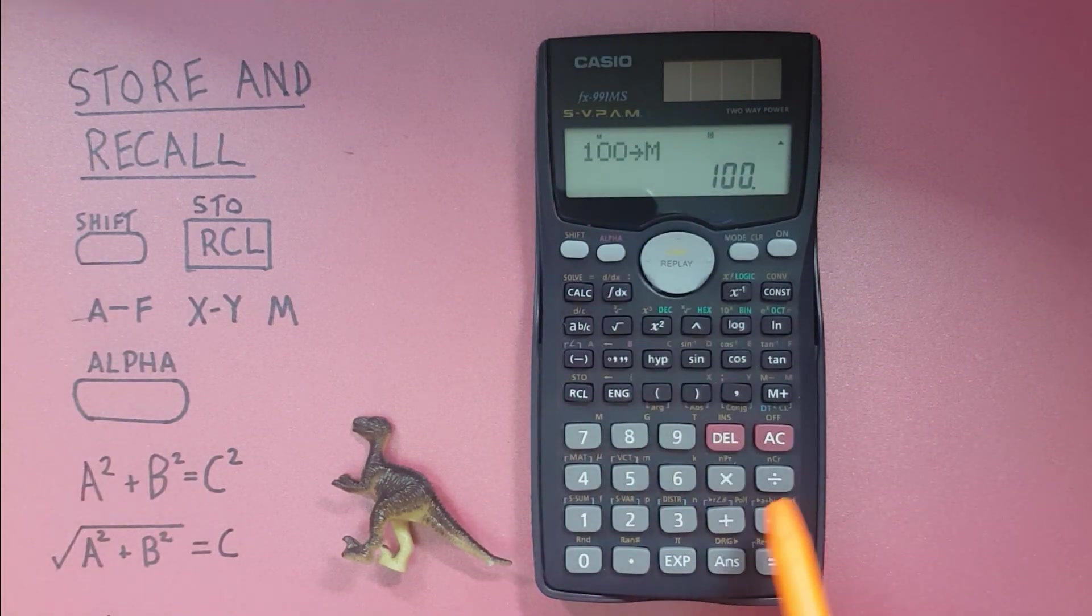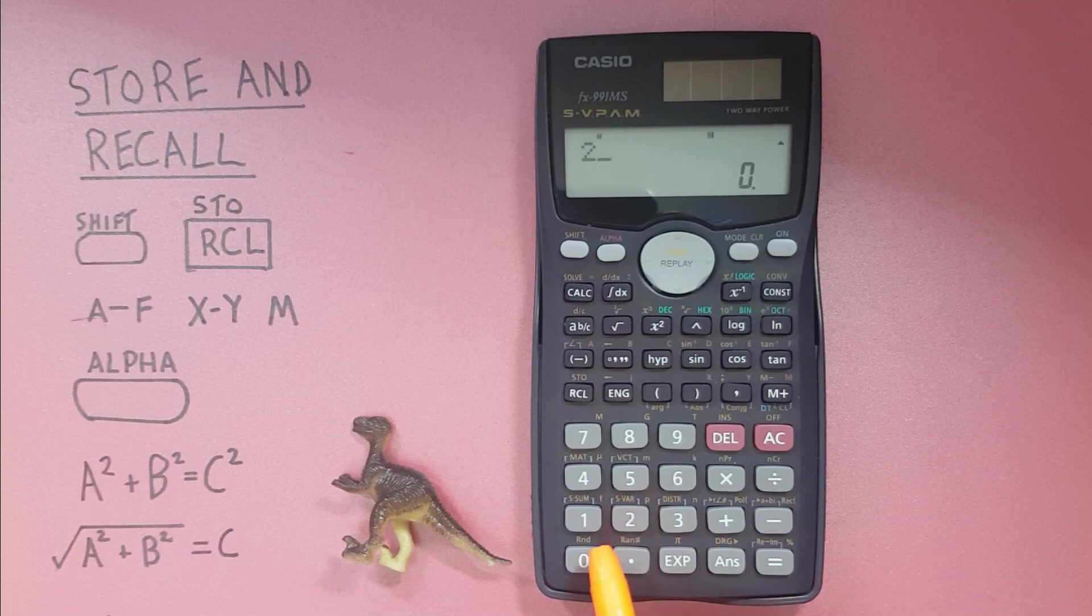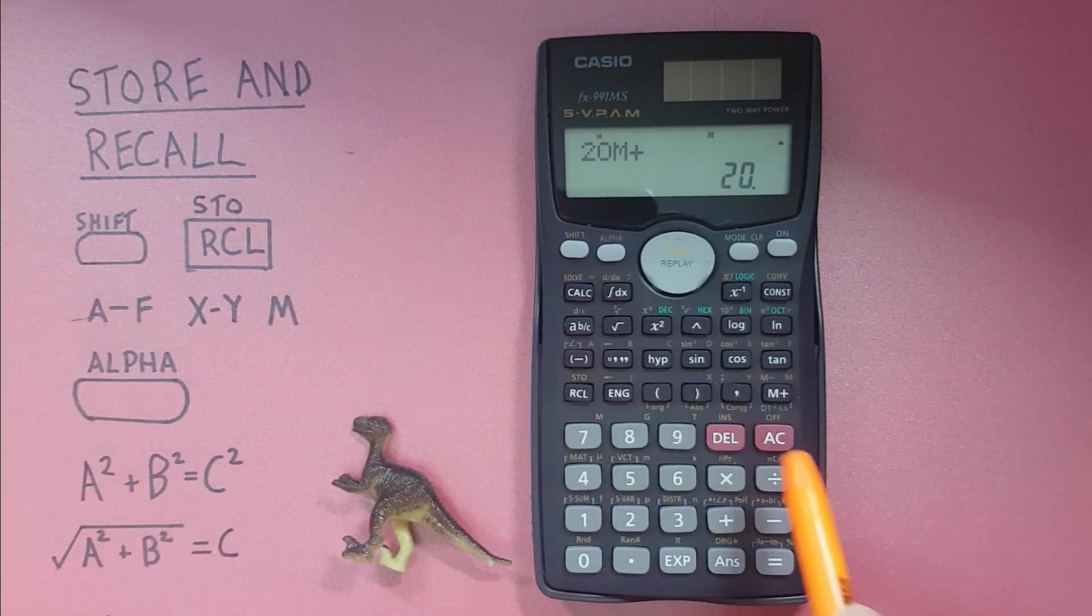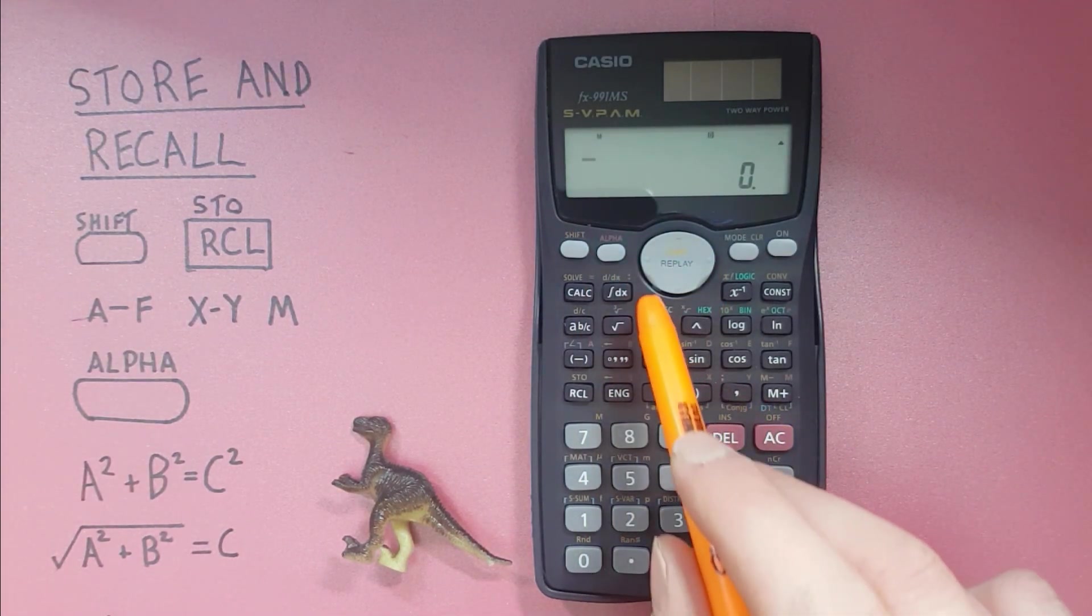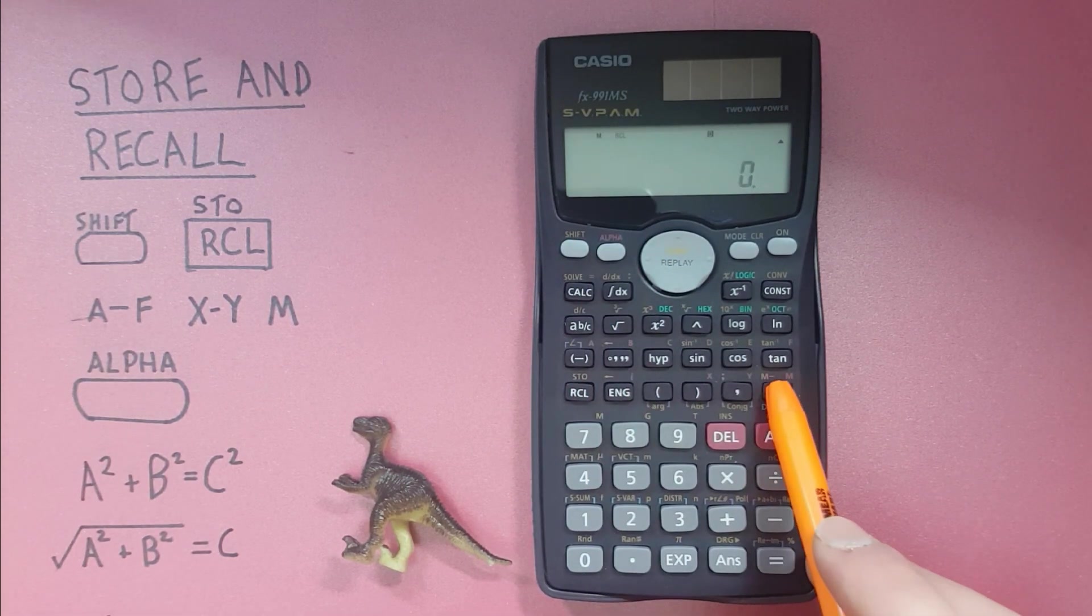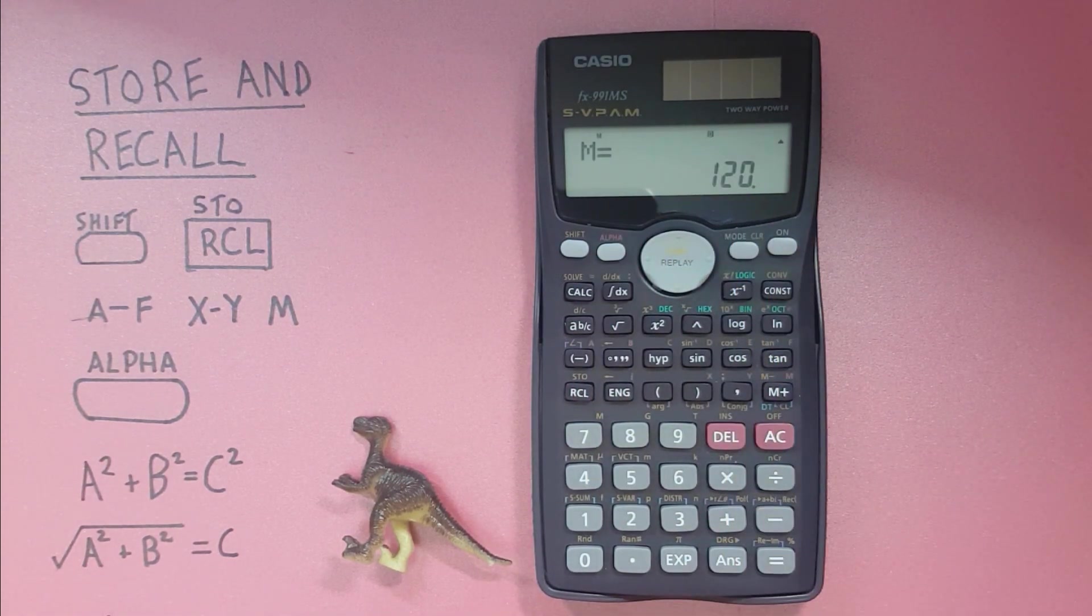And then want to add something to it, so let's add 20. We can do that simply by pressing the M plus key. There we go 20 M plus, and we can check to see if that worked by recalling it, recall M. Yep 100 plus 20.